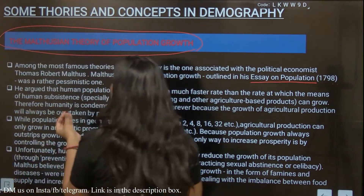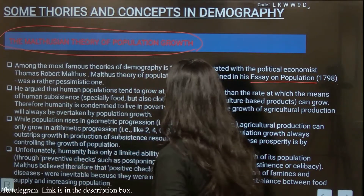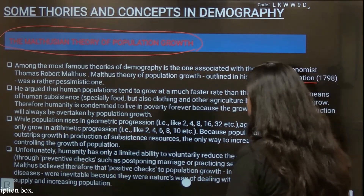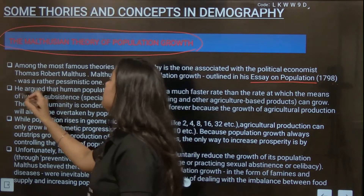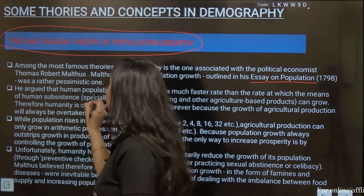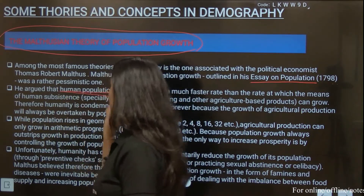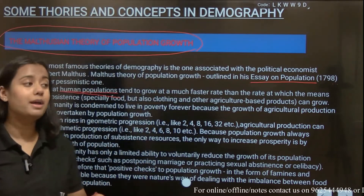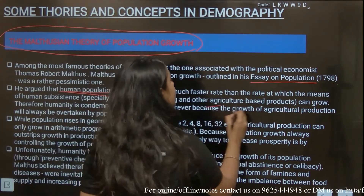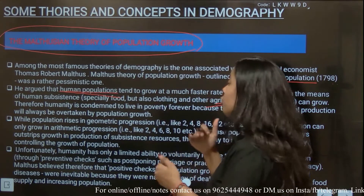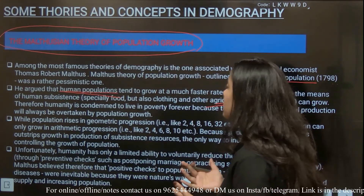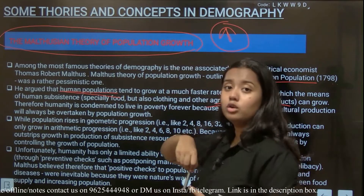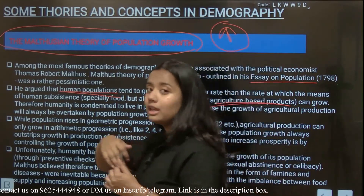He argued that human population tends to grow at a much faster rate than the rate at which means of human sustainability grow. He is saying that human population is growing very quickly, but on the other hand, our economy and agriculture-based production is growing slowly. So the human population is growing rapidly, but the growth of our agriculture — which is the basic food source — is growing very slowly.